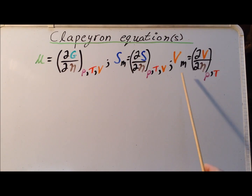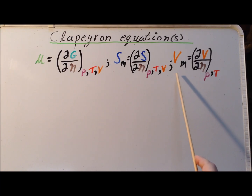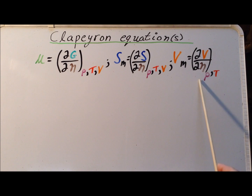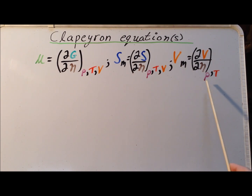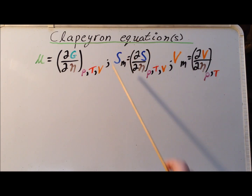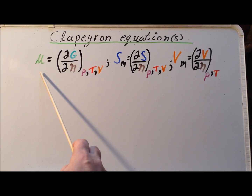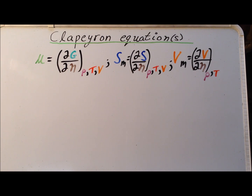Finally, we have the partial molar volume, V sub N, which is the derivative of the volume with respect to the number of moles of the material at constant pressure and temperature. Notice that using this terminology, we might just as well have referred to the chemical potential as the partial molar Gibbs energy, which is true so long as we only have a pure substance, that is a substance with only one component.